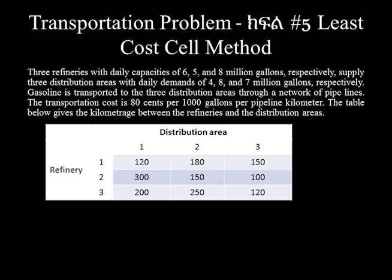This is the cost matrix for the distribution of the three refinery products to the three distribution areas. After an expansion, the capacities of refinery 2 and refinery 3 are increased by 20% and 25% respectively. The company built a fourth distribution center to accommodate this increased capacity, located 140 km from refinery 2 and 110 km from refinery 3.